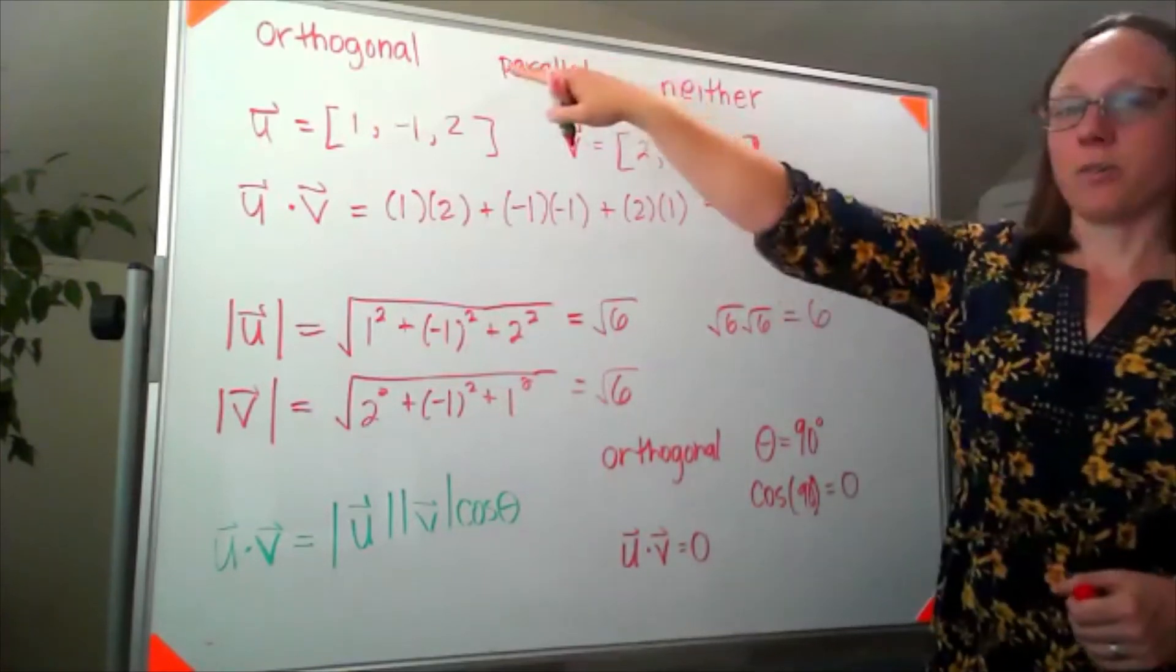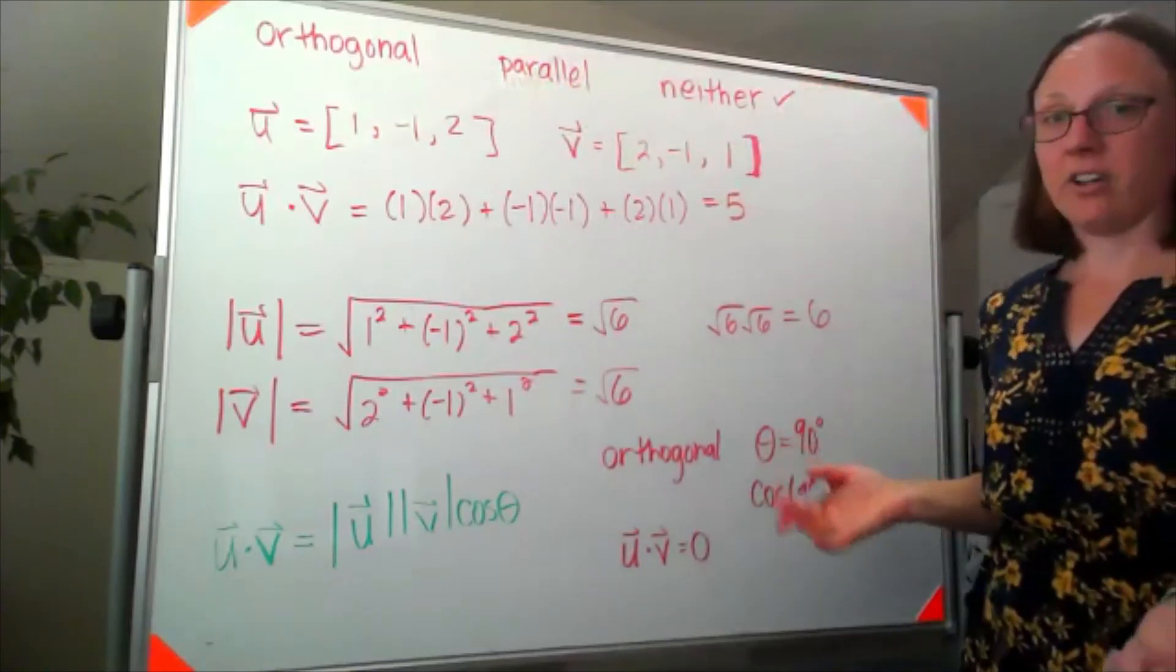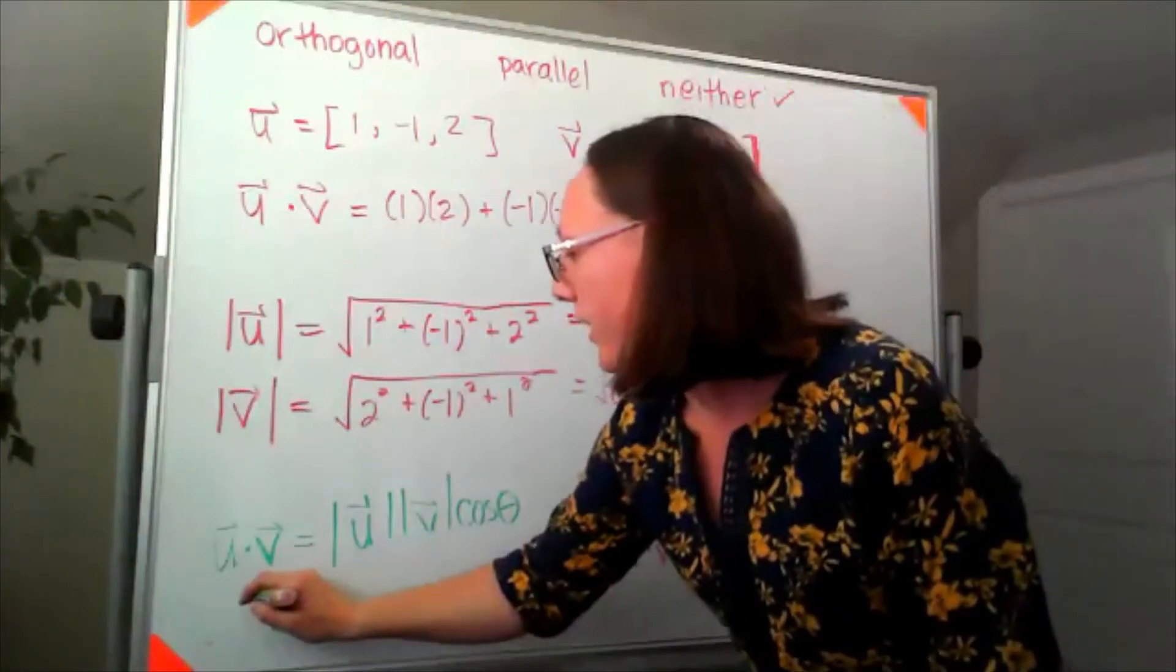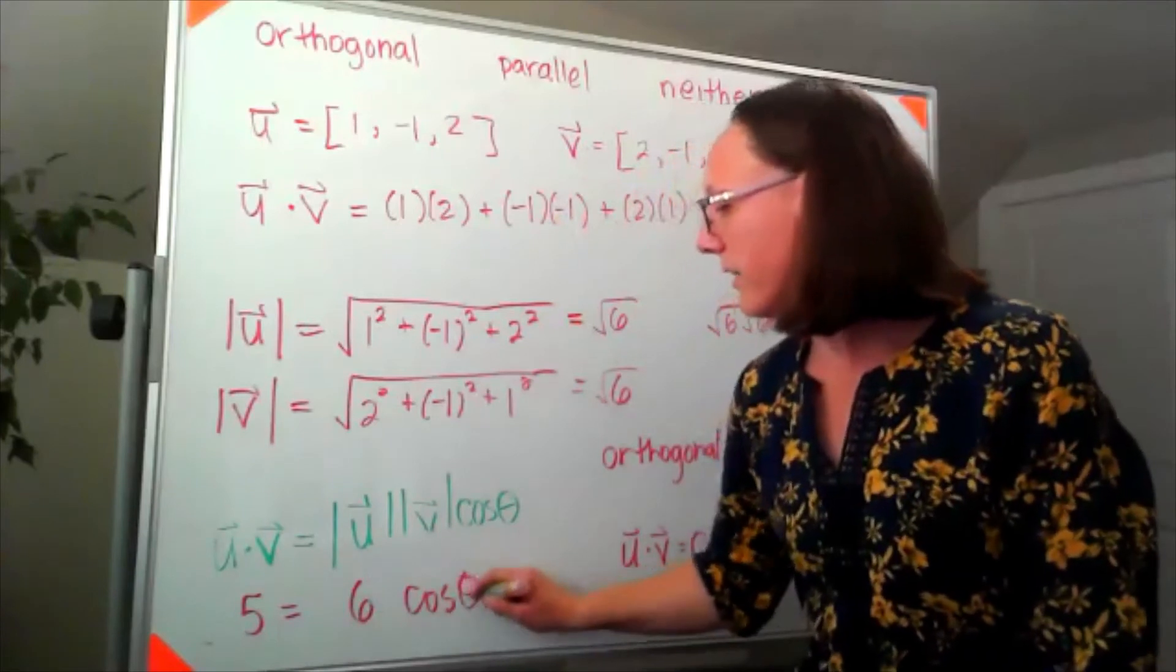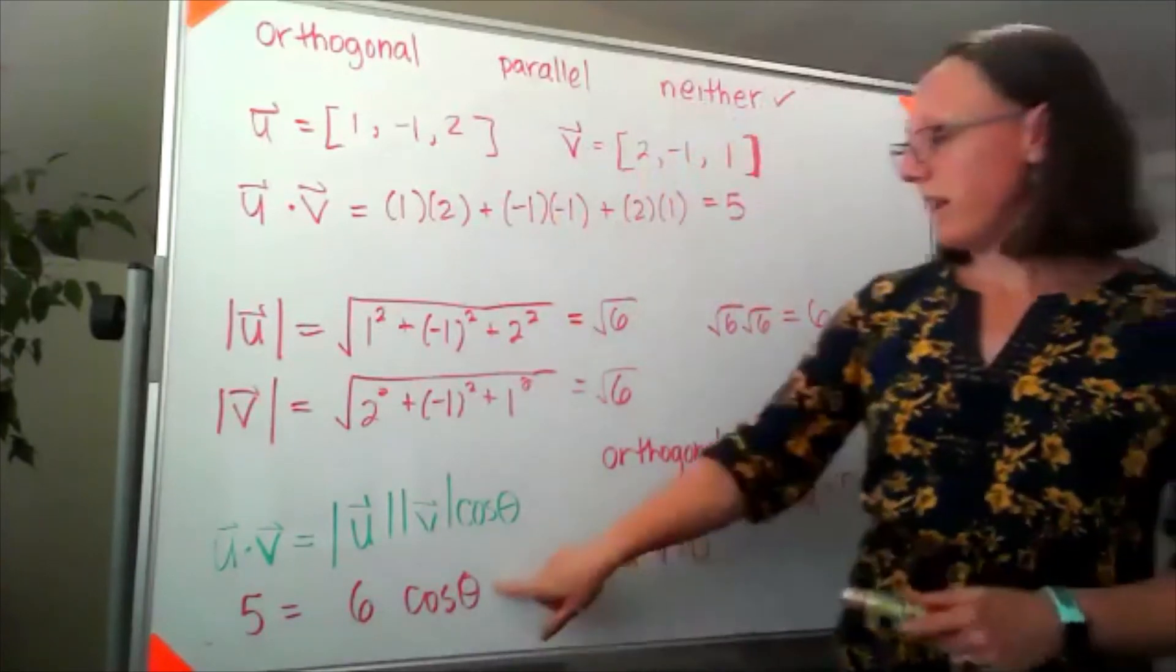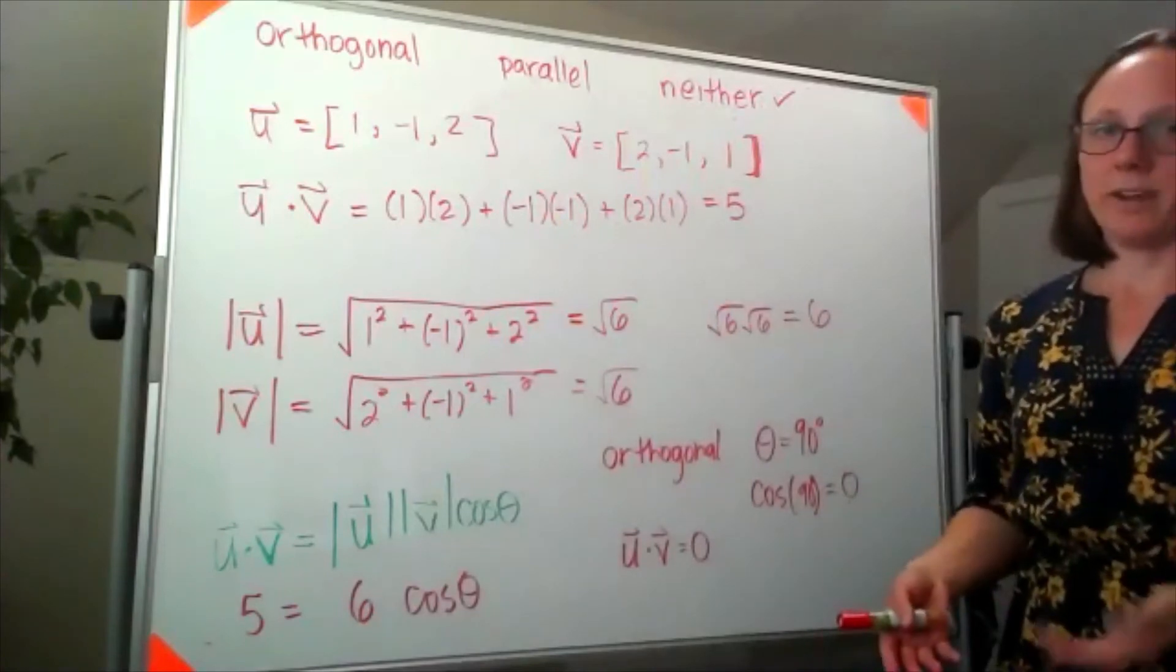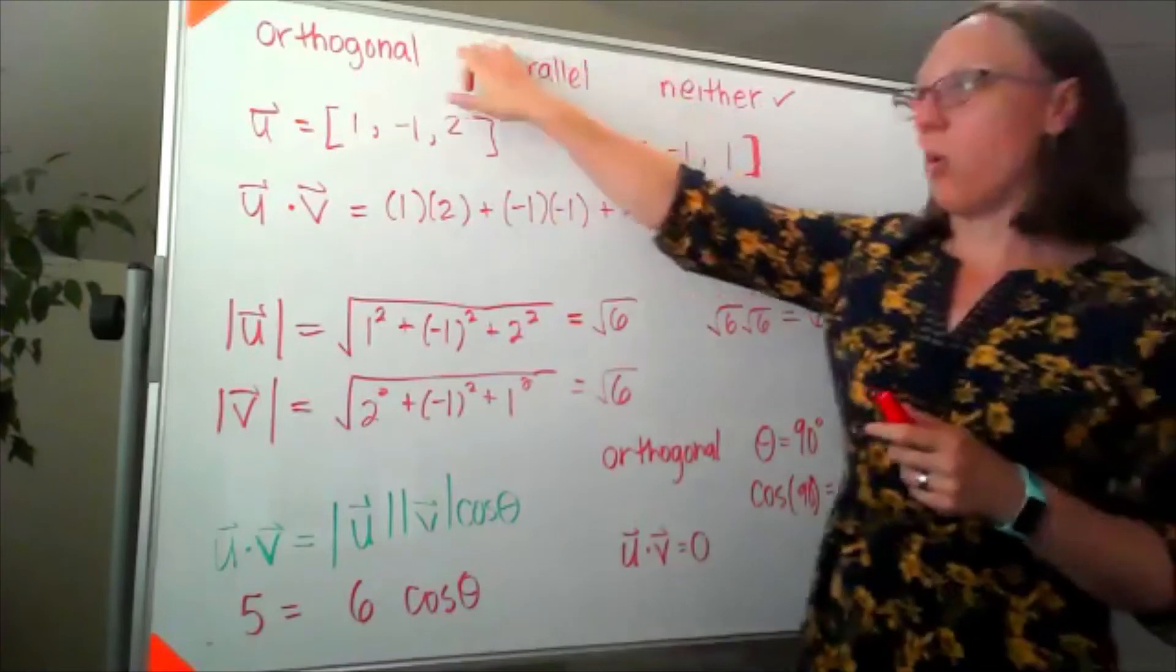Which means they're not orthogonal, they're not parallel, they are neither. If we plug these into our equation down here we'd end up with 5 is equal to 6 cosine theta. So inverse cosine of 5 sixths, that would be the angle between them. But it's definitely not an angle between them of 0 or 90 degrees.